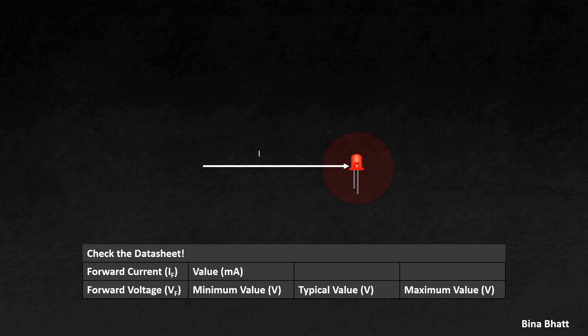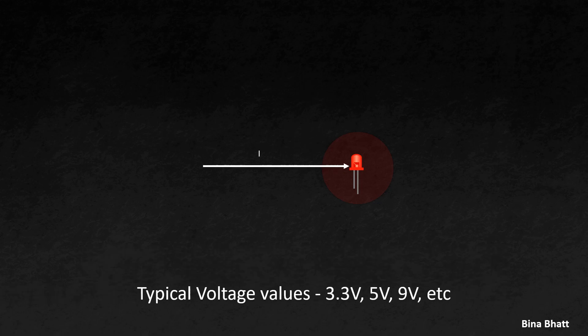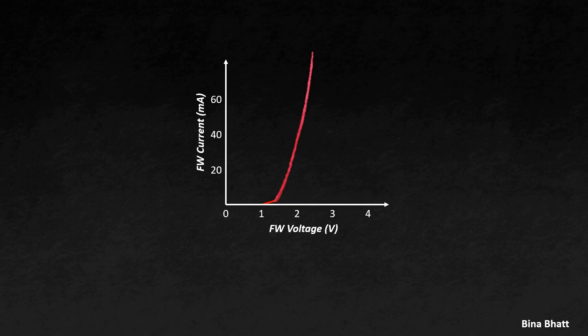The datasheet also discloses the forward voltage value — this is the minimum amount of voltage required to switch on the LED. Generally, we use 3.3V, 5V, 9V, etc. to energize our circuits. If you apply 3.3V directly to your red LED, this voltage is well above the threshold voltage, and as you can see from the graph, it will cause a huge amount of current to flow through the LED — definitely beyond the maximum current limit — and this will damage the LED.